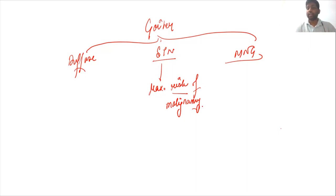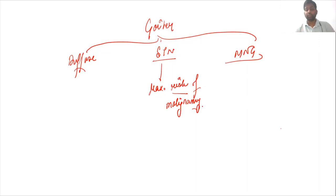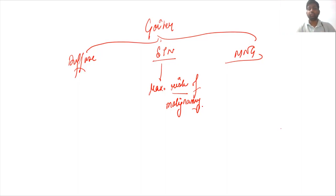The next step is lab investigation — we go for TSH. Depending on the TSH we proceed to ultrasound assessment. Ultrasound findings can be cystic or solid; for a solid nodule we do thyroid staging, and on that basis we decide whether the patient requires an FNAC. The FNAC reporting is done as per the Bethesda system, which we covered in the previous video, and we will now look into each Bethesda category in detail.